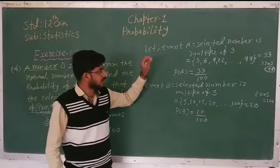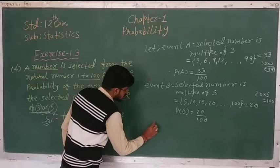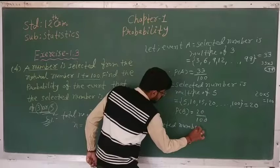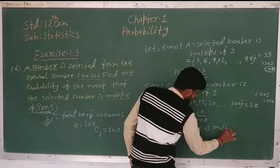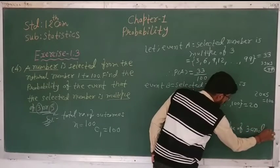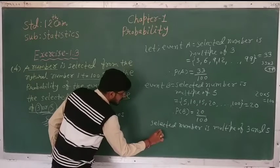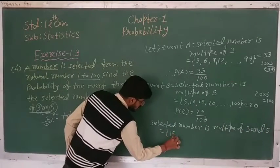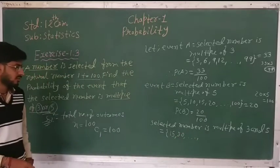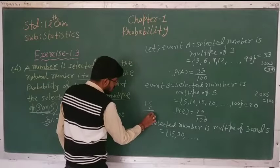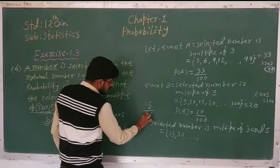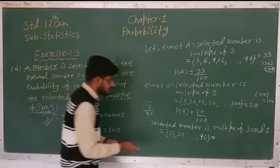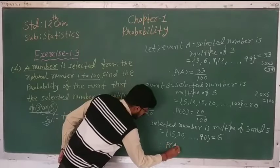Next we have to find the numbers that are multiples of both 3 and 5. Since LCM(3, 5) = 15, the selected number must be a multiple of 15. The multiples of 15 go up to 90 (since 6 times 15 is 90), so there are 6 such numbers. Therefore P(A∩B) = 6/100.